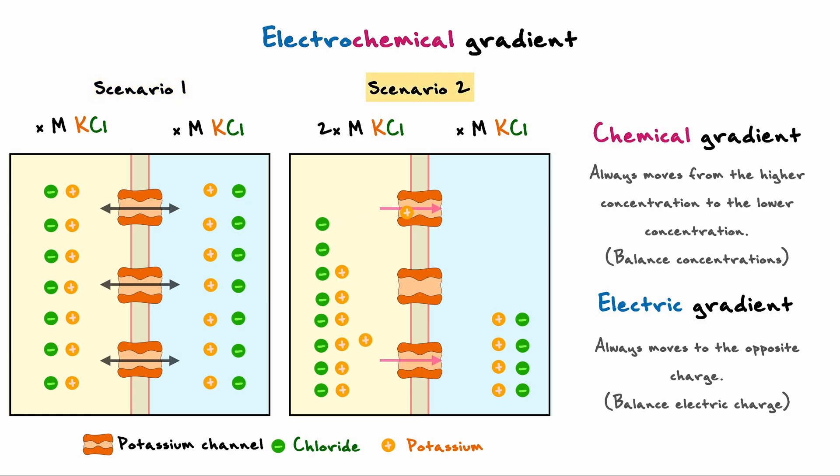In the second scenario, however, since there are two times more potassium chloride on the left side, the chemical gradient will drive the potassium to equilibrate by crossing over to the right. Remember that here, it's only the potassium that crosses because it is the only ion that the membrane is permeable to.